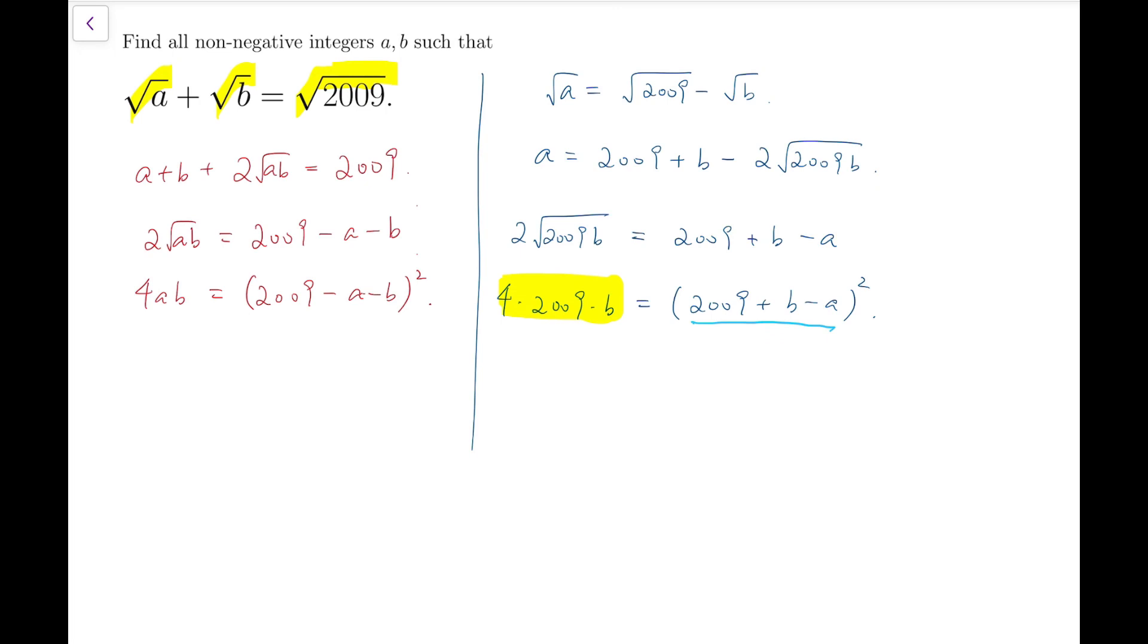This is different from what I've done on the left side, the things that I've written in red. Because knowing the fact that 4ab is a perfect square means nothing. It just means that a times b has to be a perfect square, so that's not really helpful.